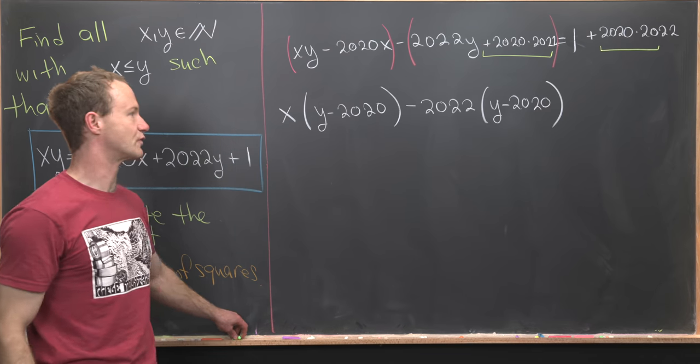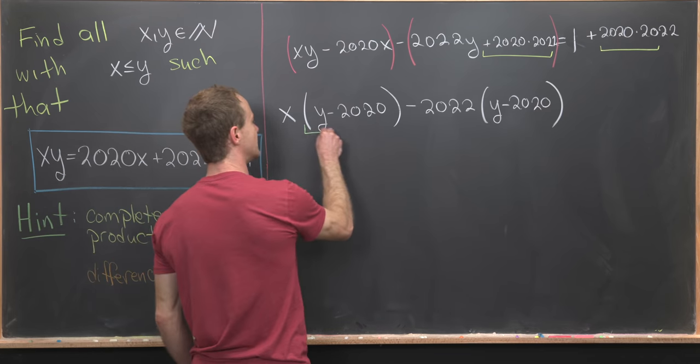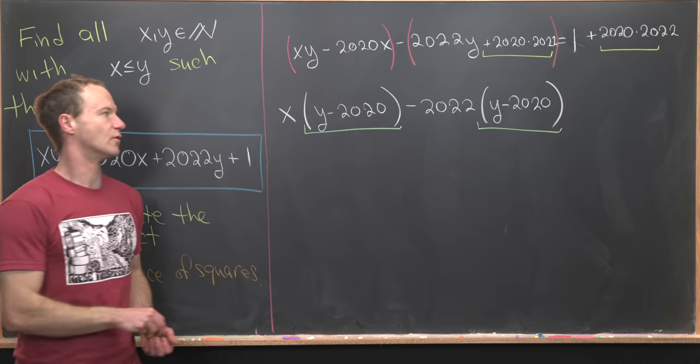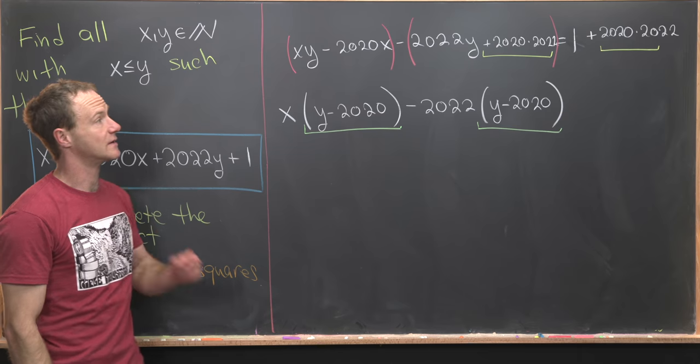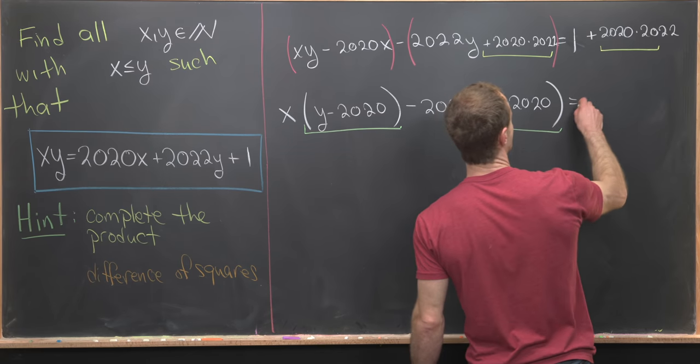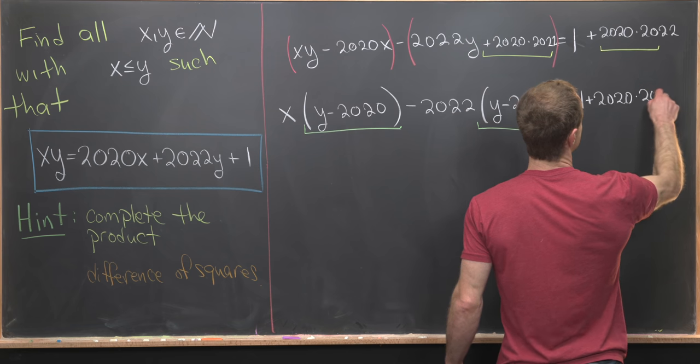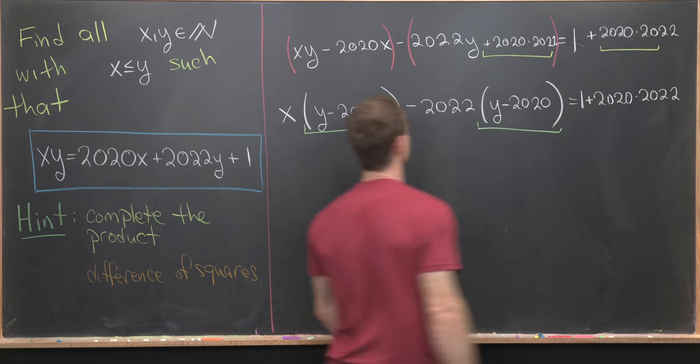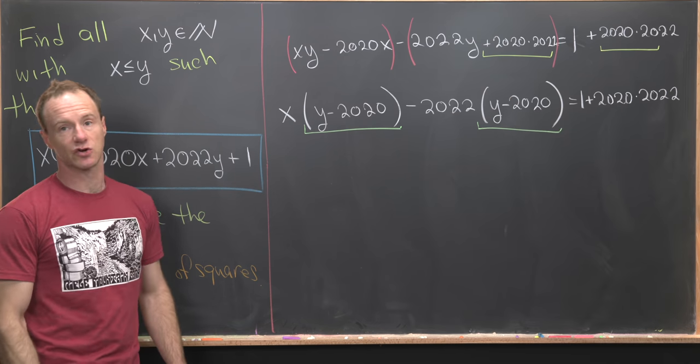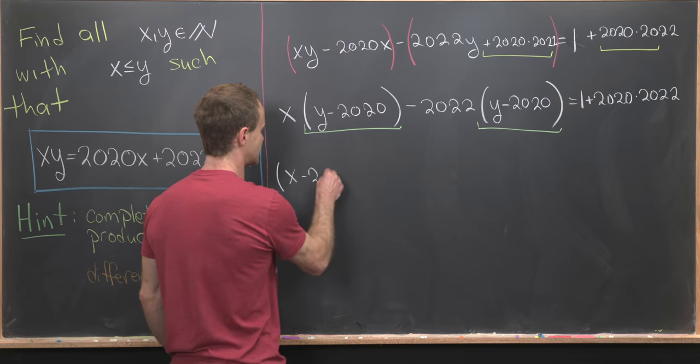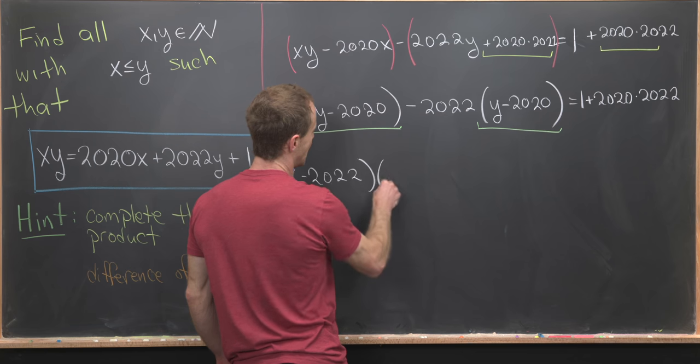But that's actually really good news. Because now we can view this left-hand side as having a common factor of y - 2020. And then we'll just bring this down. So we'll have 1 + 2020×2022.